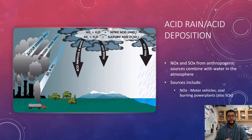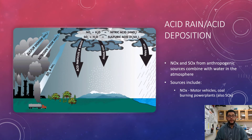Very similar to that up there. And those will end up falling down in slightly lower pH as acid rain, acid snow, things like that.